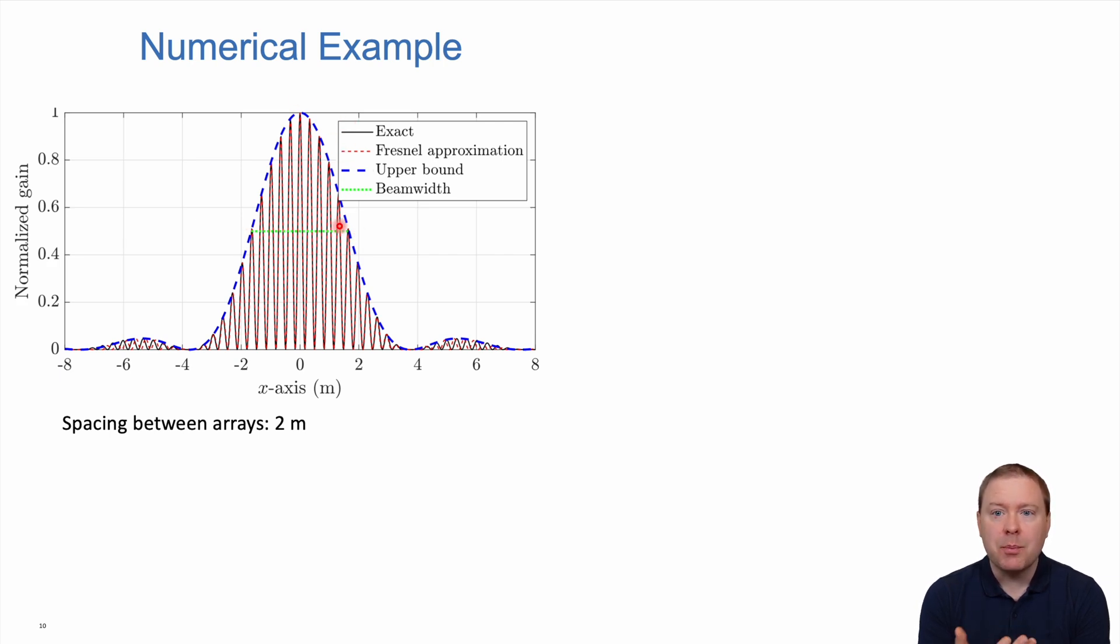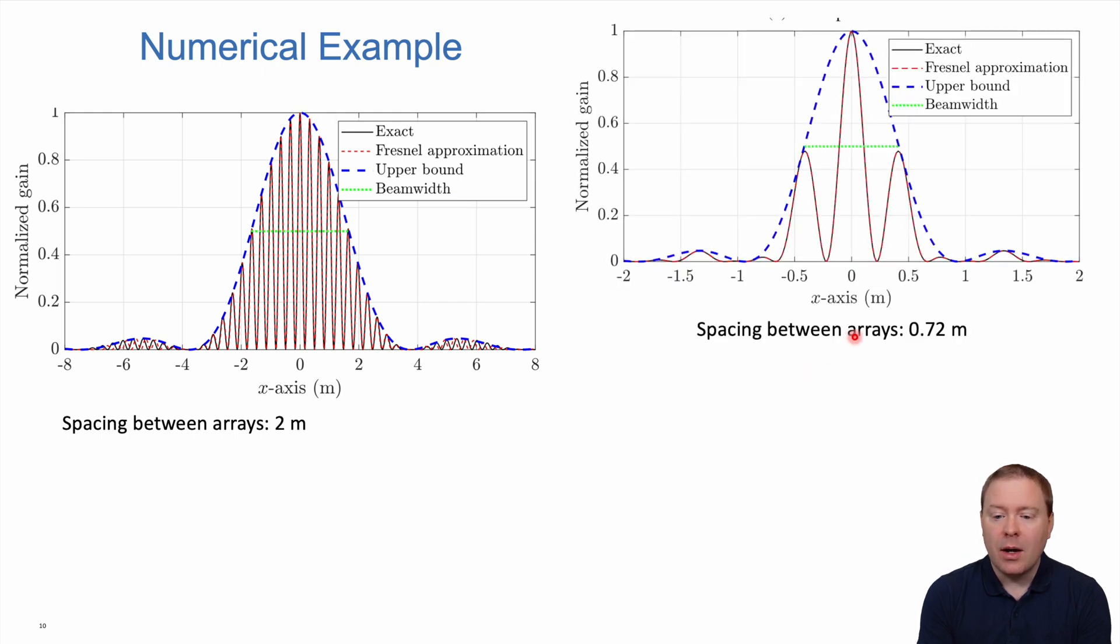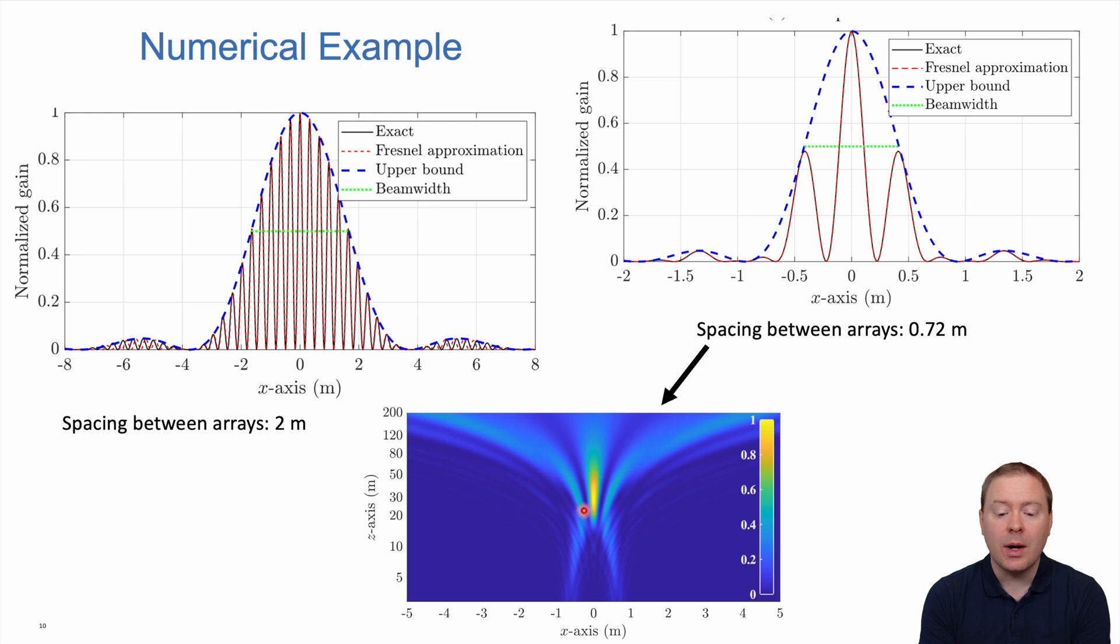Reducing the spacing makes ripples fewer. At 0.72 meter separation, there's only one ripple inside the 3dB beam width. The illustration shows only one focusing place with yellowish color. We can do very clean beam focusing with two antenna arrays that each can only do far field beamforming, separated 0.72 meters apart, and suddenly they can do beam focusing together.